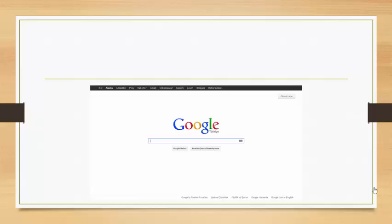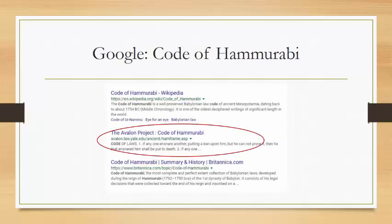A general internet search works most of the time if you already know what you're looking for with regards to a primary source. For example, searching for the Code of Hammurabi from ancient Mesopotamia brings you what you need right away, because you know the title and the historical era of the item you're looking for.